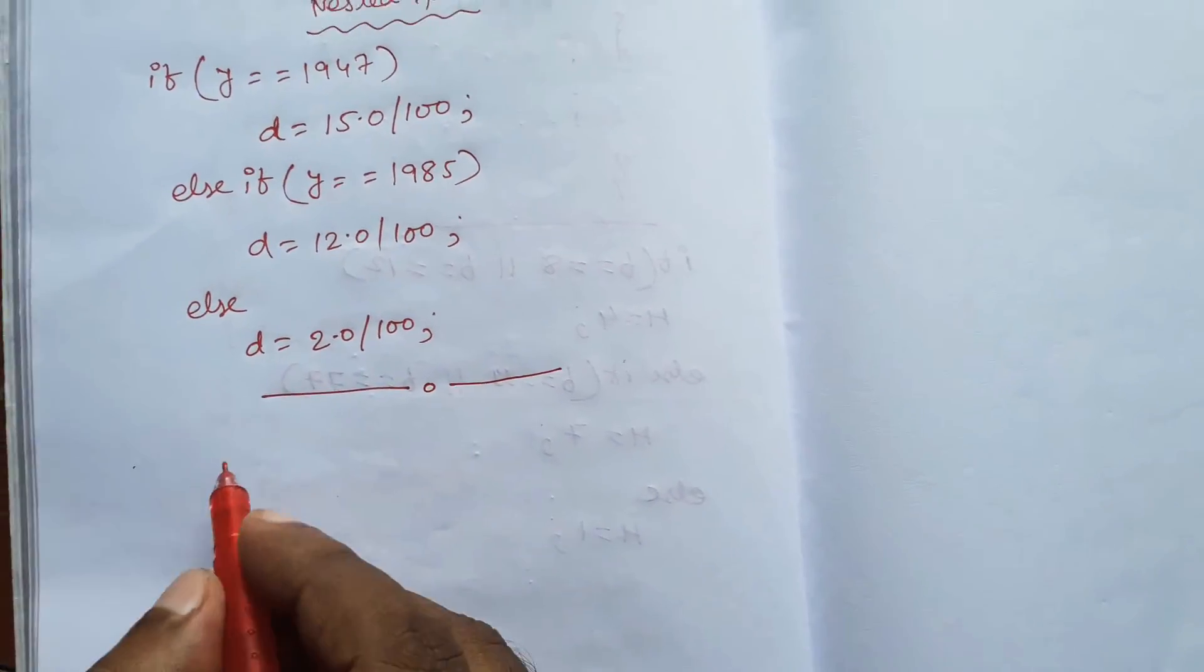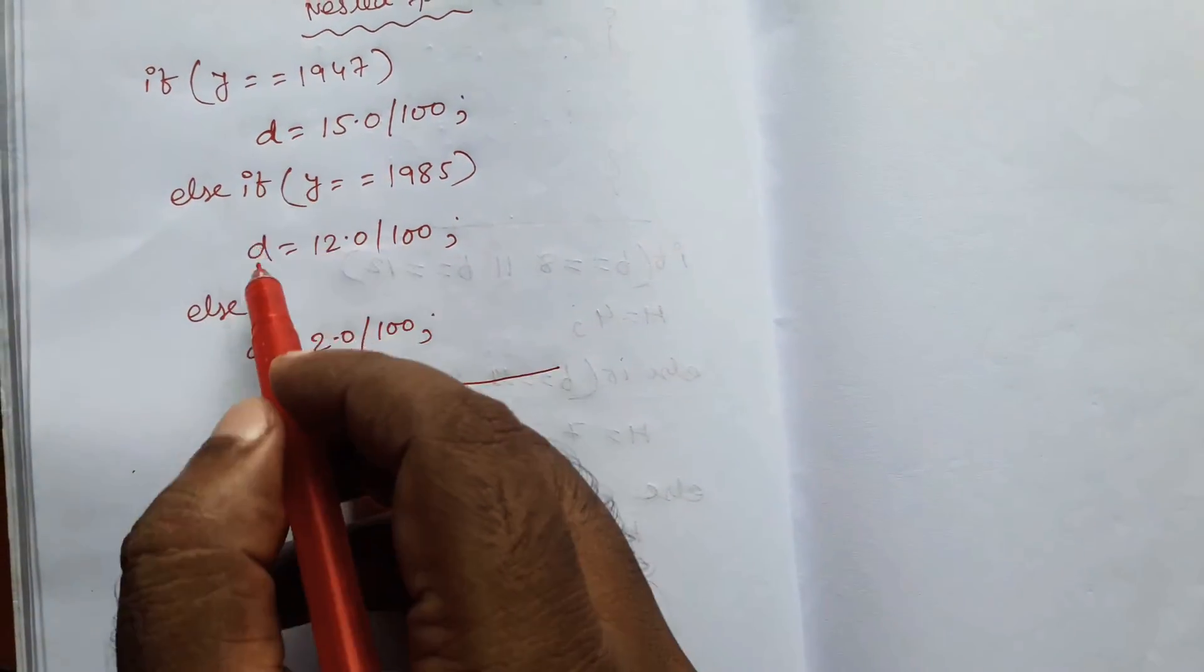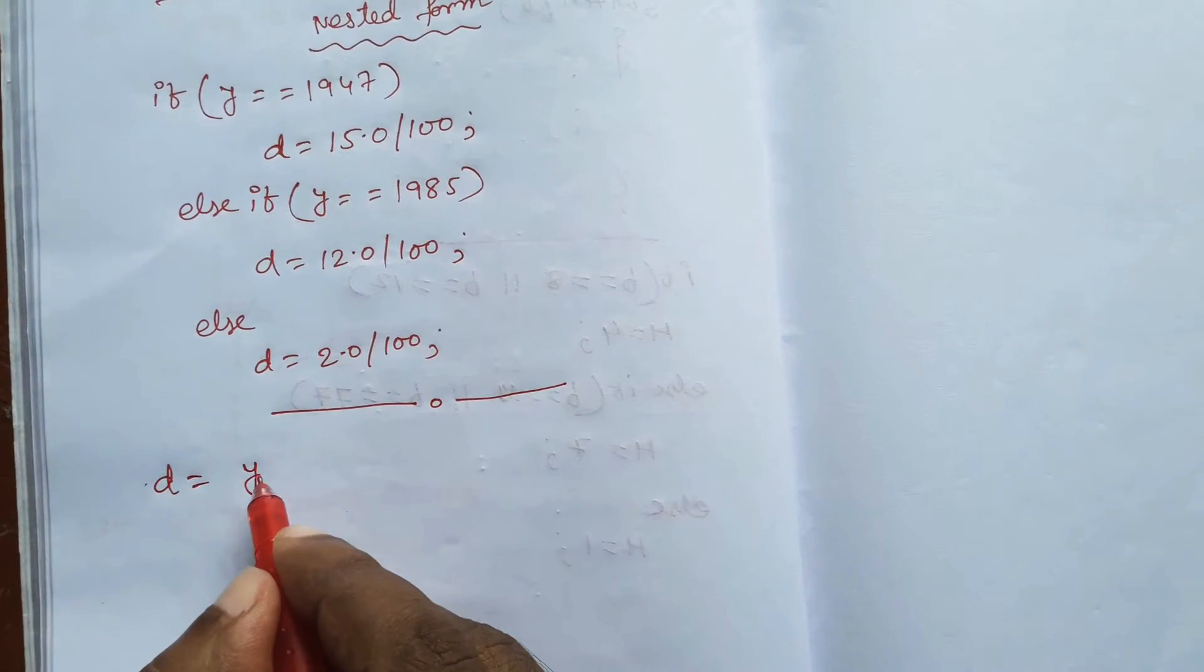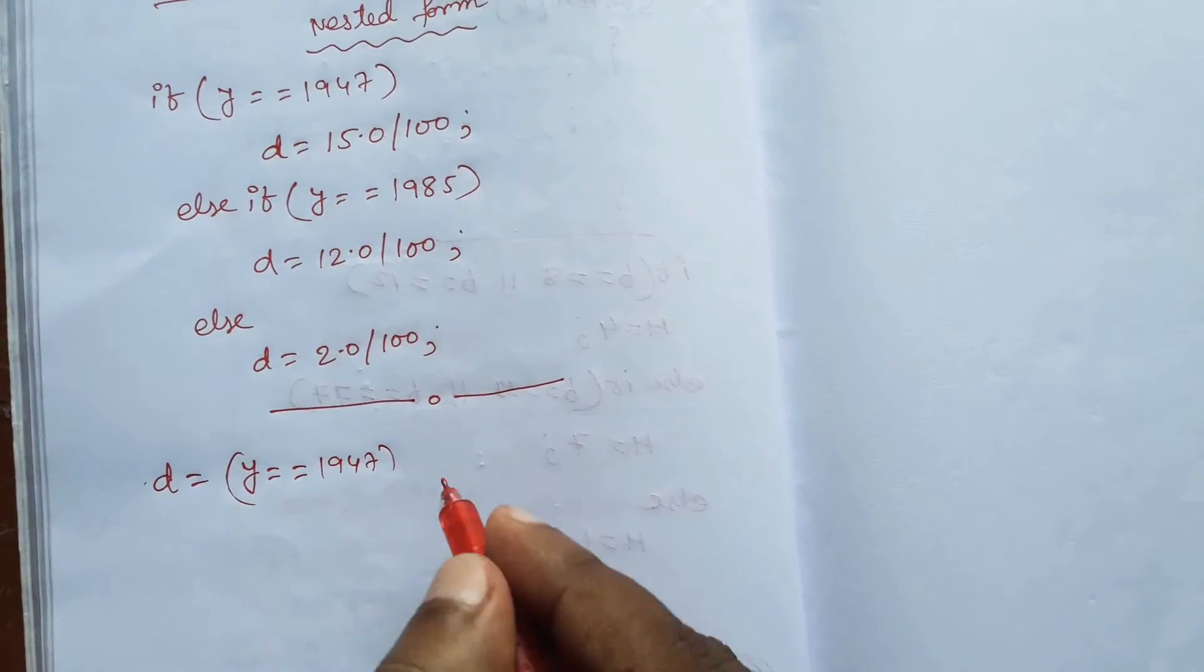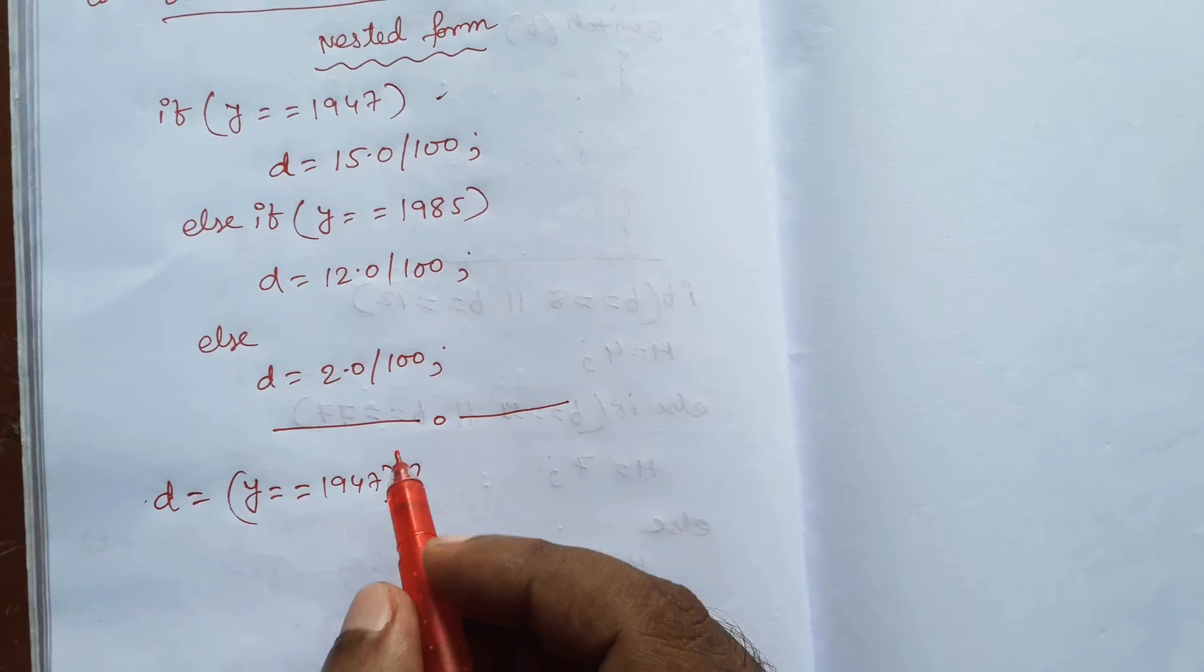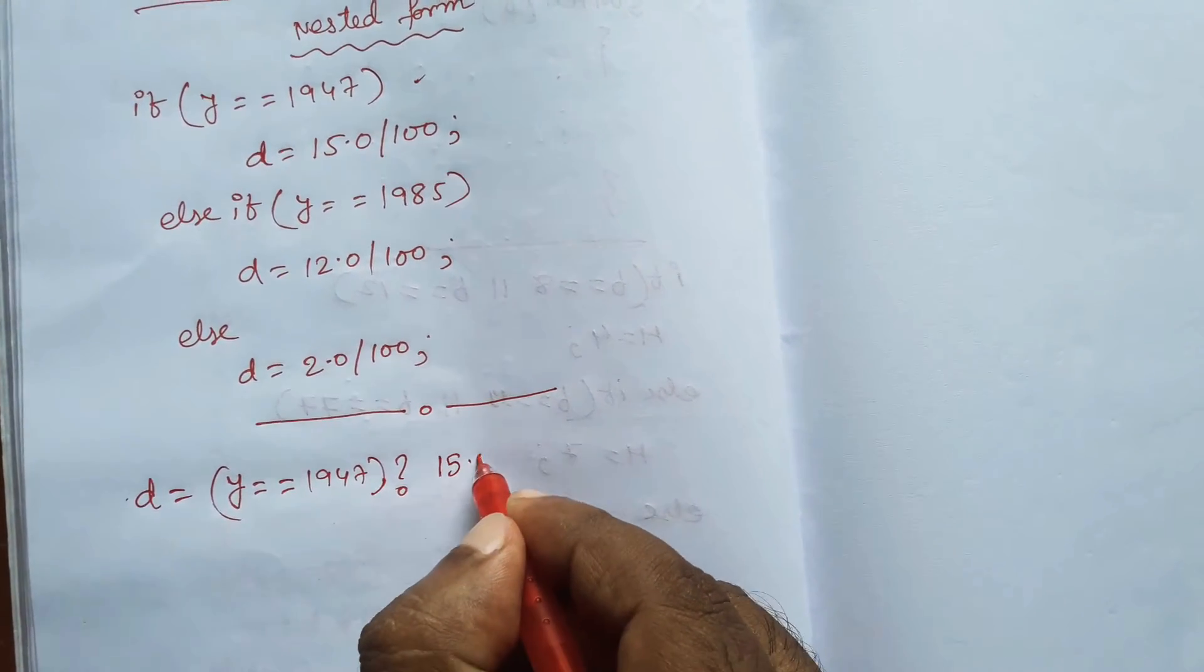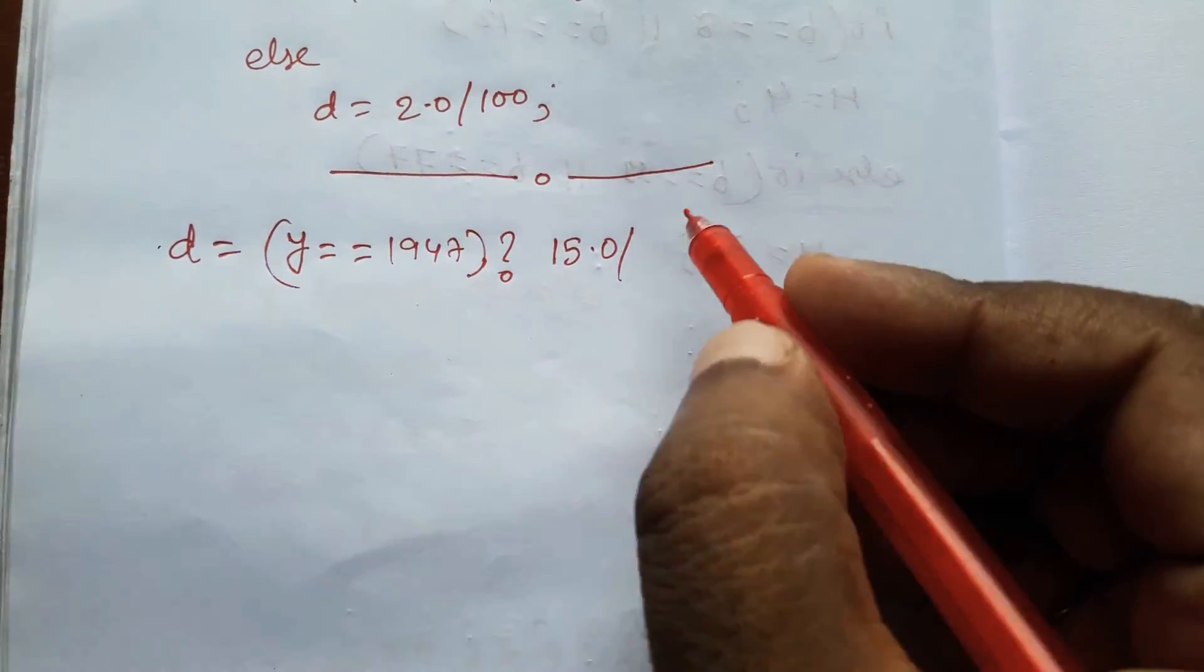First, we will write d equals to, since our result is storing in d. Now we write the first condition: y equals equals to 1947. Then we give a question mark. That is our first condition. Now we give the value 15.0 by 100.